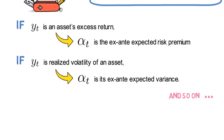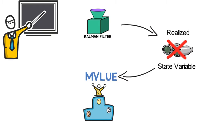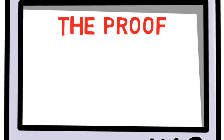I will now prove the following statement: The Kalman filter solution for the most likely value of the realized yet unobserved state variable is MVLUE, meaning it's the most precise estimate among any other linear unbiased estimators.